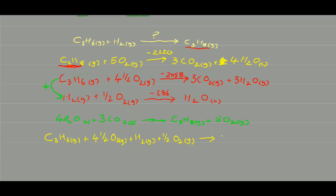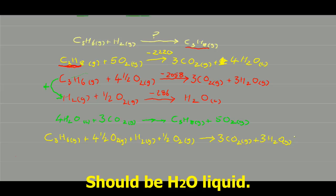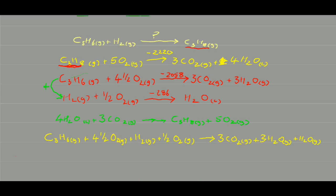Combining terms: I have 4 H2O molecules on the right, and 4.5 plus 0.5 gives 5 O2 on the left. So the combined equation simplifies with 5O2 on the left-hand side. The numerical values for this combined equation are minus 2058 plus minus 286, which equals minus 2344 kilojoules per mole.